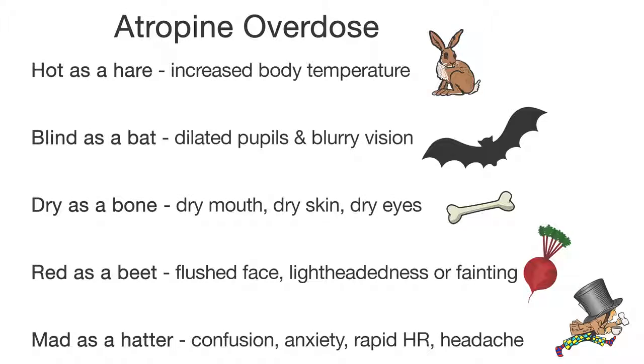Atropine is an anticholinergic used to treat bradycardia, reduced salivation, and bronchial secretions before surgery, and as an antidote for overdose of cholinergic drugs or mushroom poisoning. Watch for signs and symptoms of overdose to include the following.